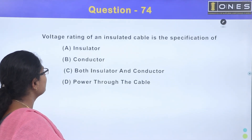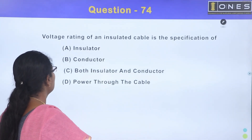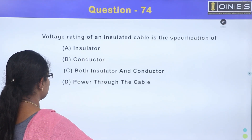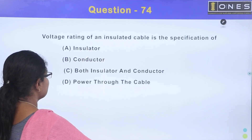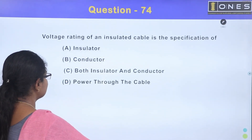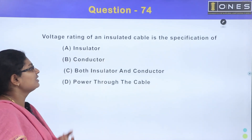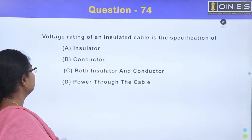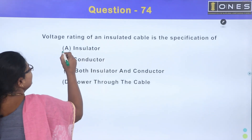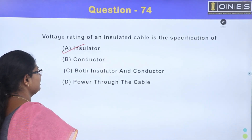Voltage rating of an insulated cable is the specification of: Option A, insulator; Option B, conductor; Option C, both insulator and conductor; Option D, power through the cable. The voltage rating of an insulated cable is about the insulator. The answer is Option A.